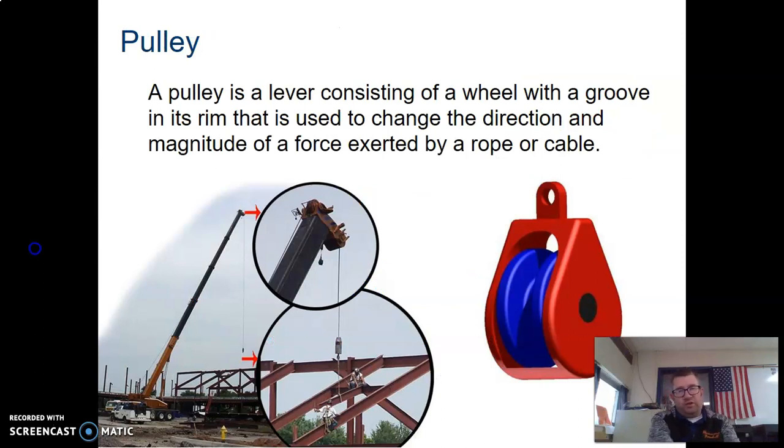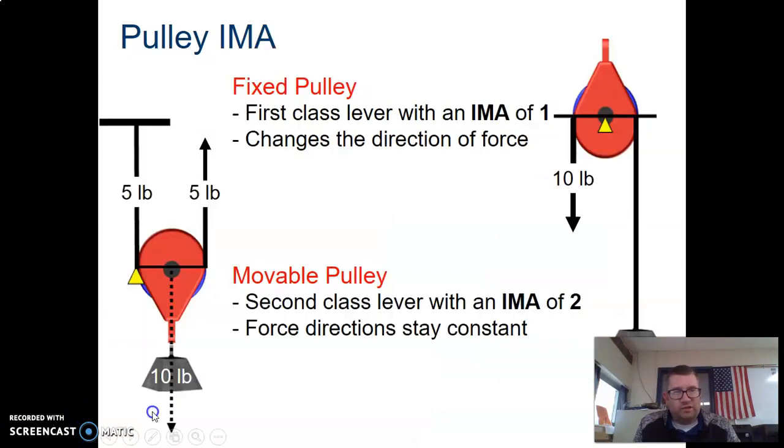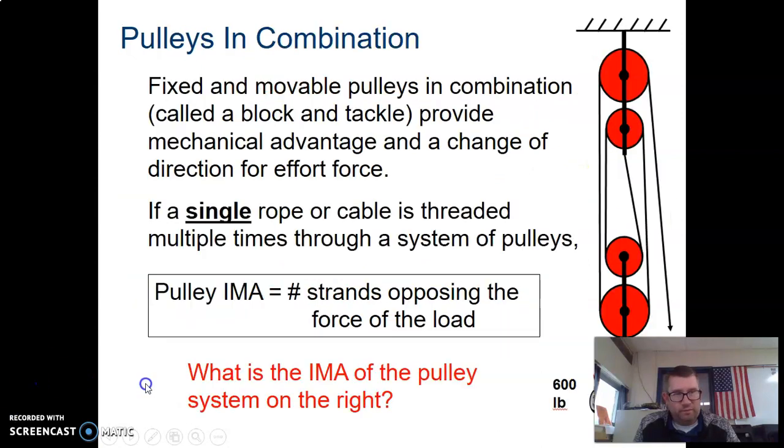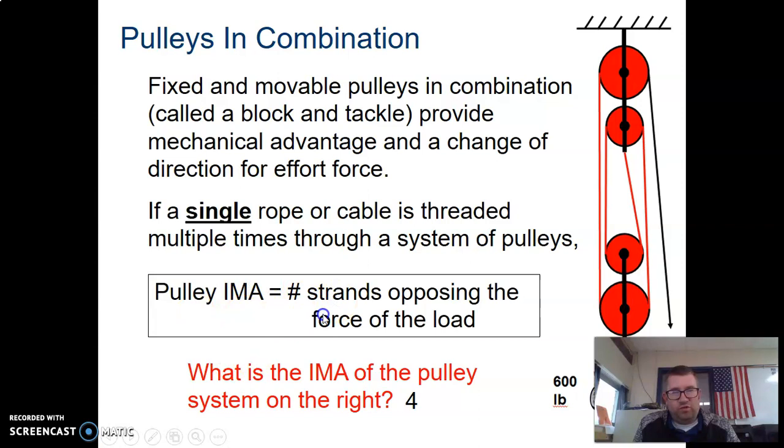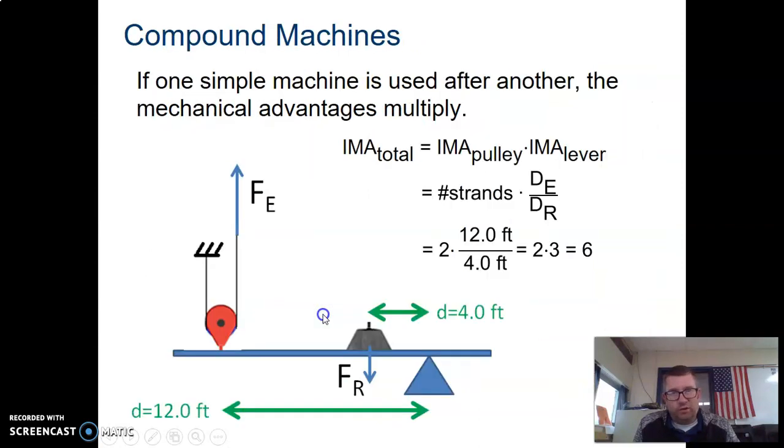Pulleys are pretty simple. Lever consisting of a wheel with a groove with ropes. Basically, what you need to know about pulleys is the mechanical advantage of a pulley is the same as the number of strands in the pulley or in the block and tackle system. Fixed pulley, movable pulley. Here, two strands, IMA of two, one strand, IMA of one. Combination, again, number of strands. That's all you need to know about pulleys.